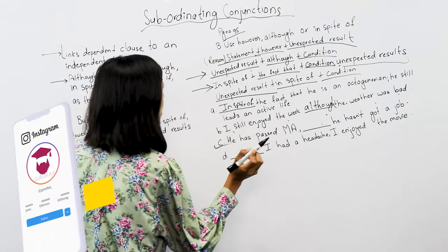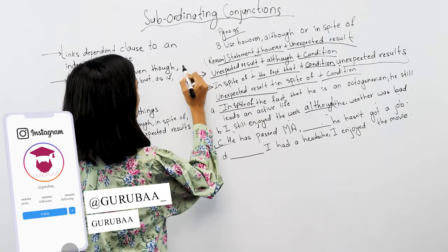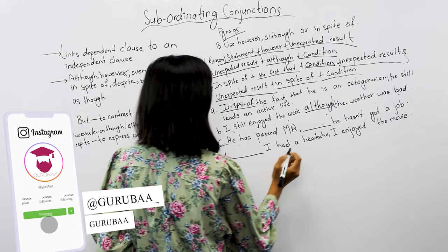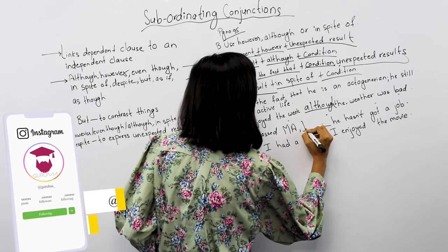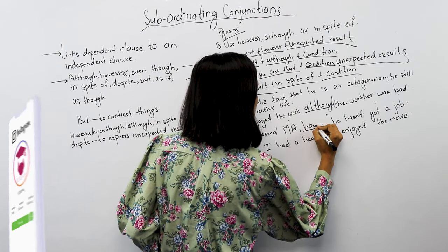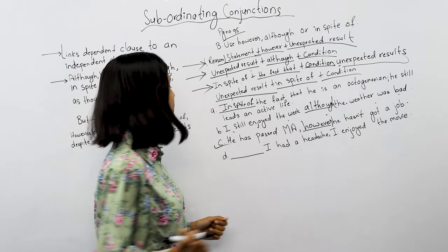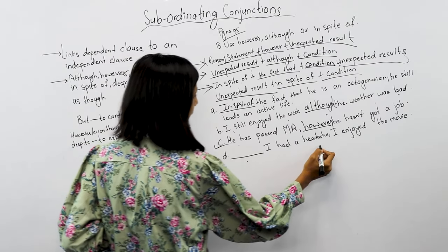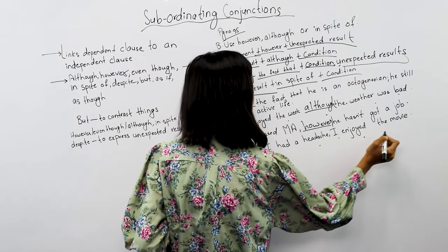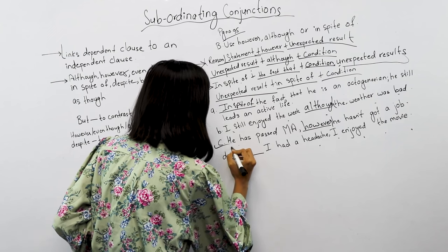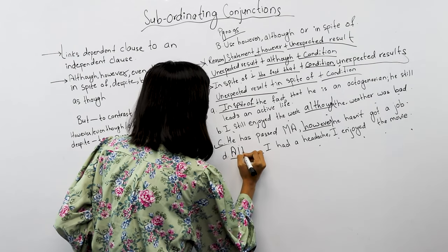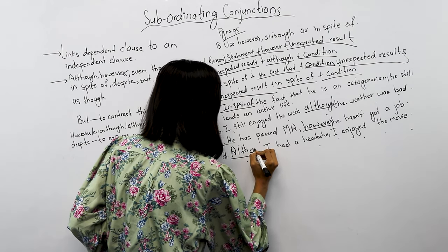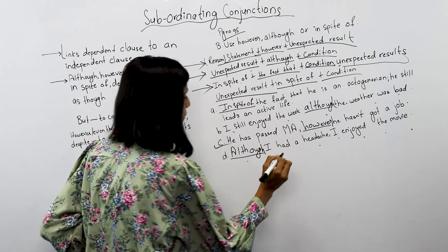For Number C, we solve using the first structure. For Number D: 'I had a headache. I enjoyed the movie.' We will keep both clauses. The answer is: 'Although I had a headache, I enjoyed the movie.'